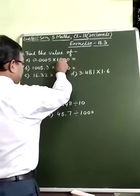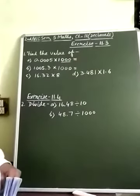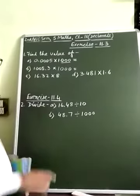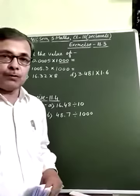In multiplier, there are three zeros. Therefore, in multiplicand, decimal point will move to the right side three digits.